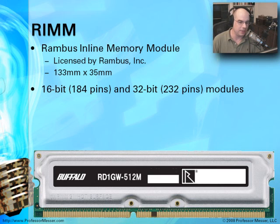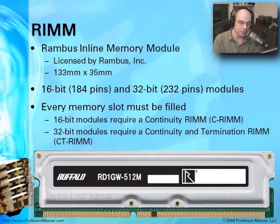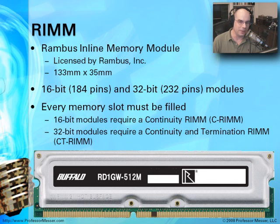There are 16-bit and 32-bit RIMMs, but we really don't see those anymore. They had to be installed in pairs inside a motherboard. If you were only using one module, you had to have essentially a blank to fill in the rest of the slots. These 16-bit blanks were called continuity RAMs or C-RAMs. These 32-bit modules are called continuity and termination RAMs, or CT-RAMs. This type of memory was used within a certain time frame and was licensed, but you really don't see them much any longer.